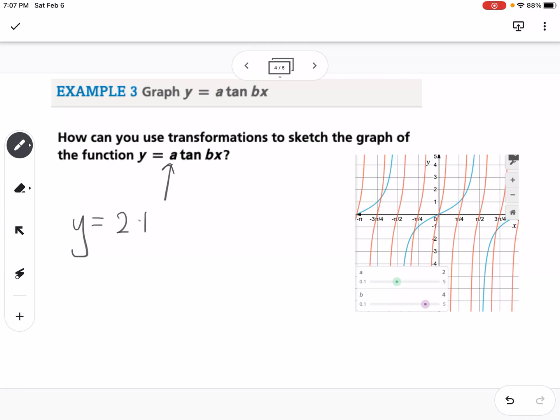So if we look at the graph of y equals 2 tangent of 4x, so the 2 is going to be a vertical stretch by a factor of 2. So if you look here, our original tangent graph is blue, and our transformed tangent graph is orange. So you can see how it's been stretched, it's steeper than our original graph.